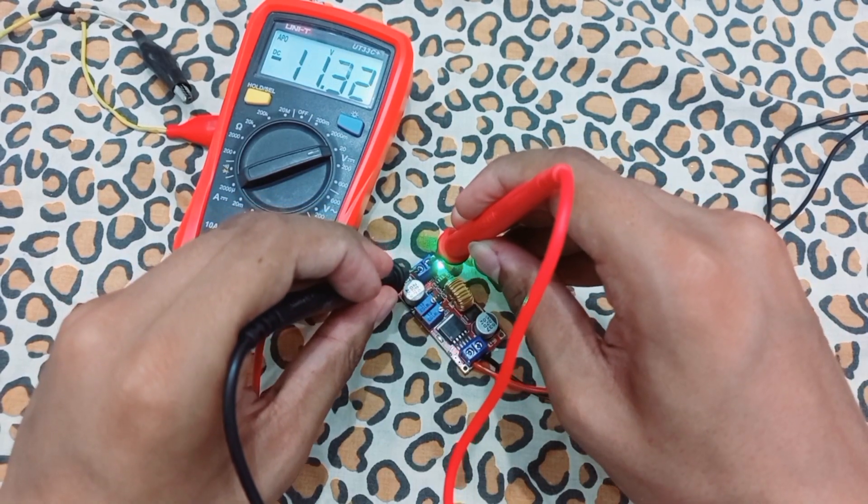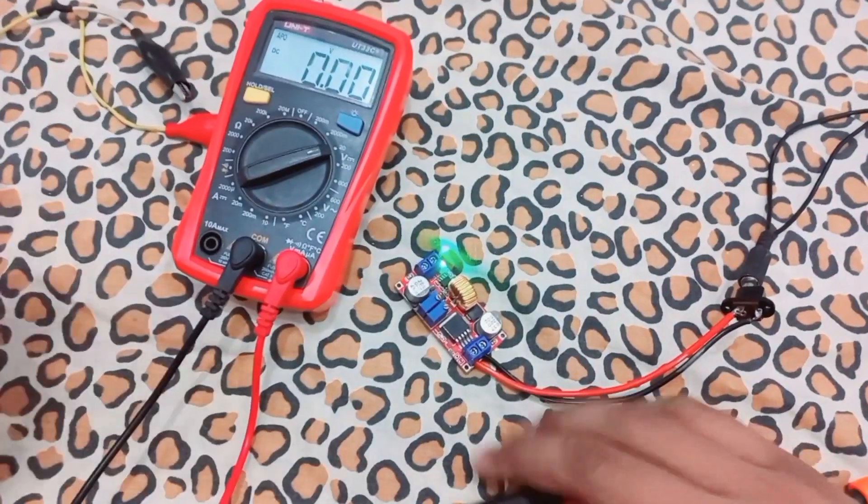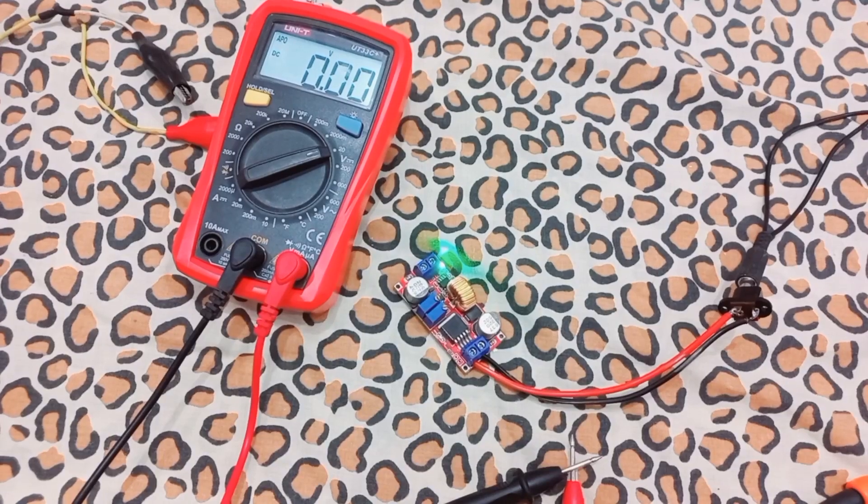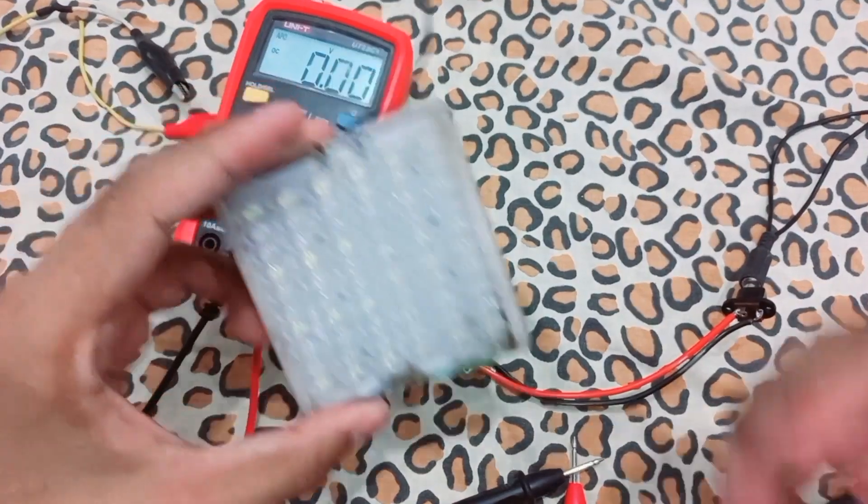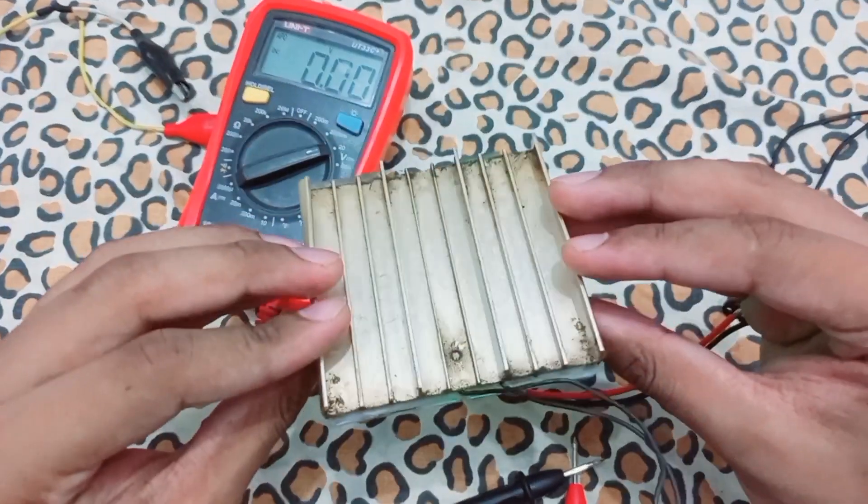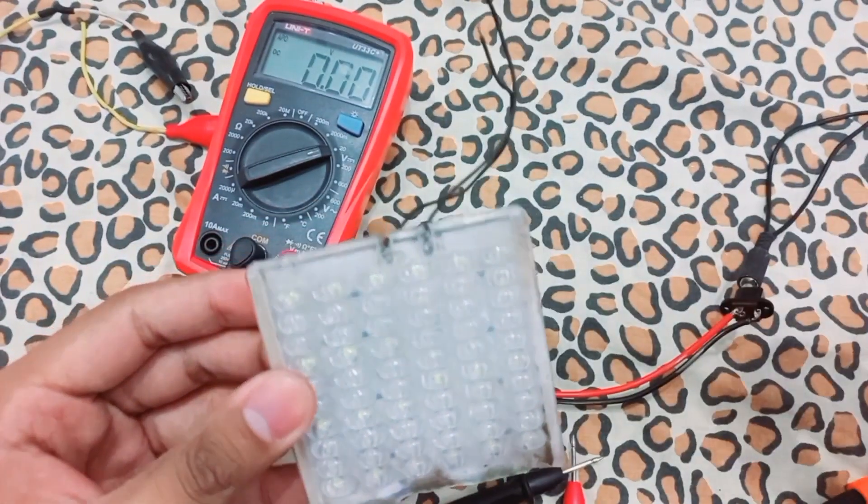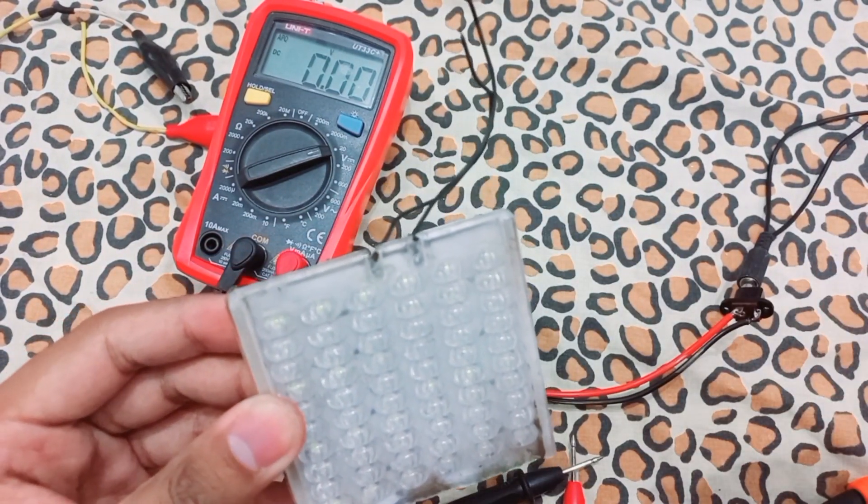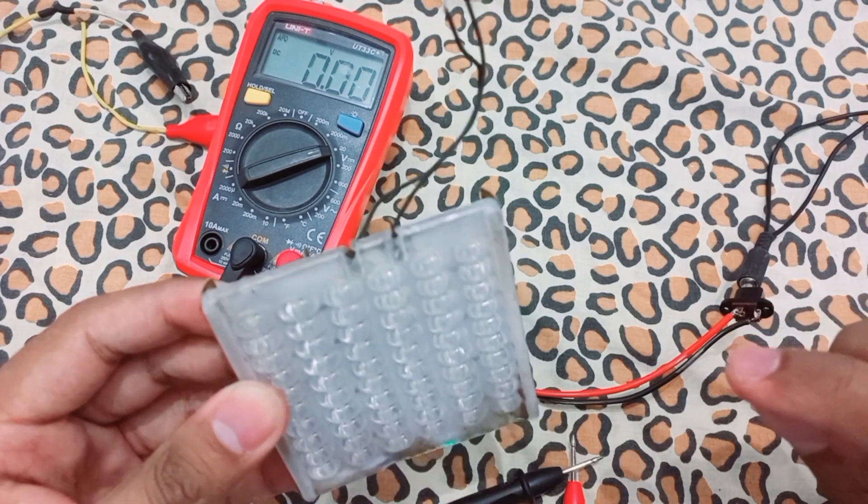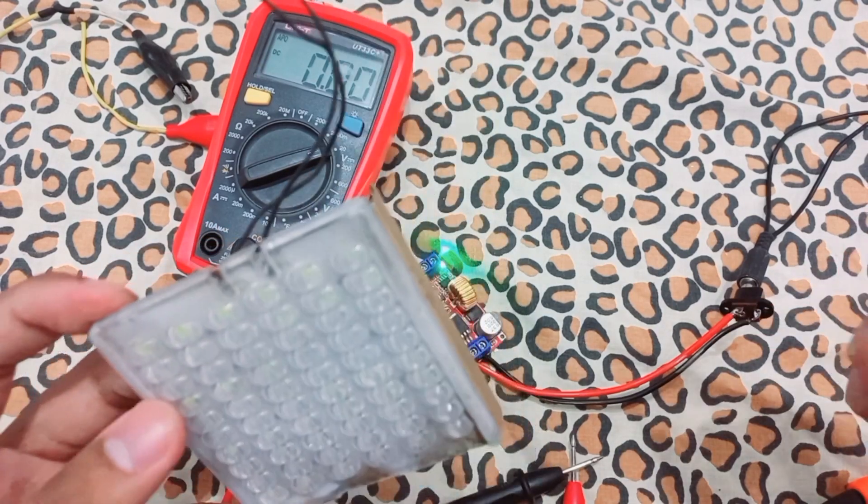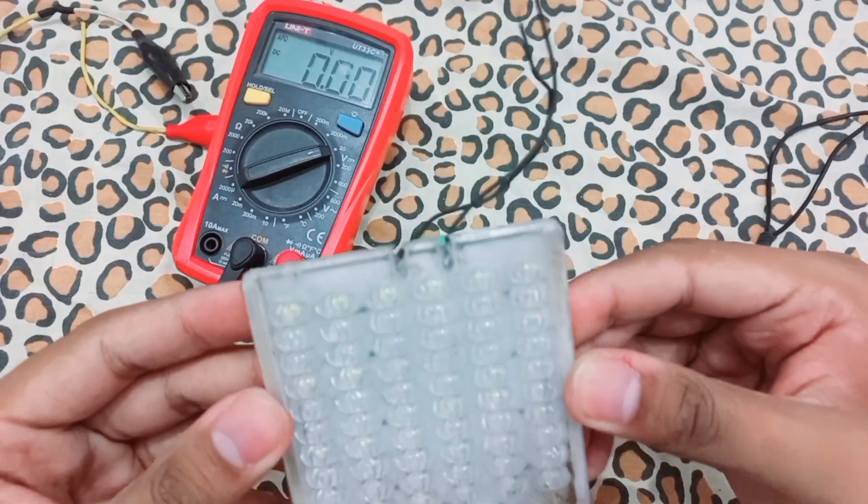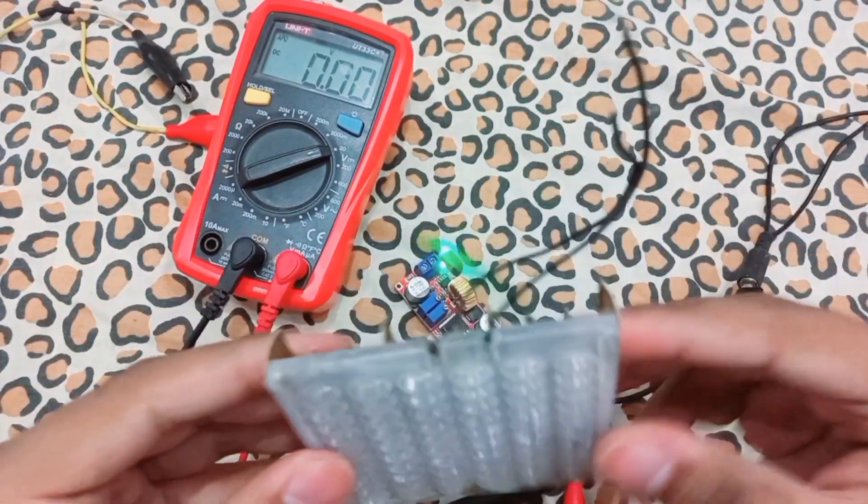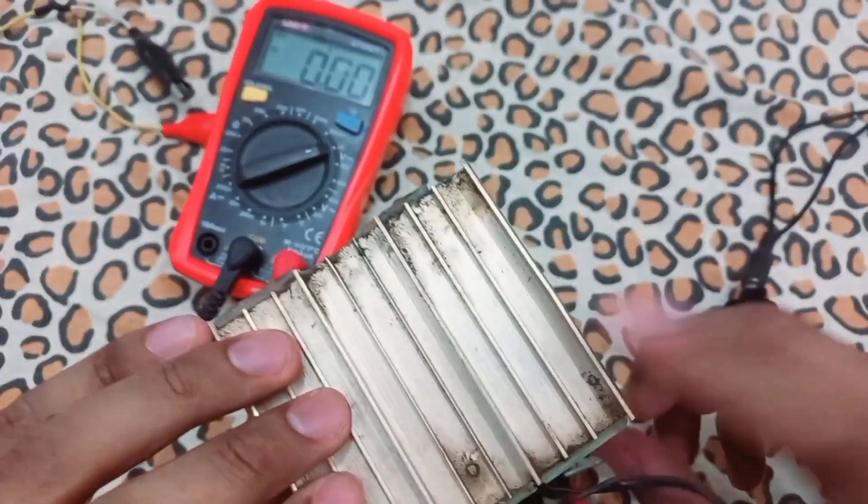I will test the LED strip. Here is the LED strip, it is a 12 volt LED strip. We have to make sure that every LED operates on constant current requirements. Every LED has its own current limit and operating voltage.